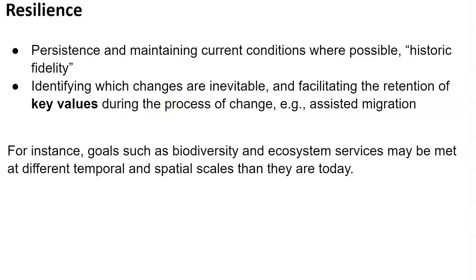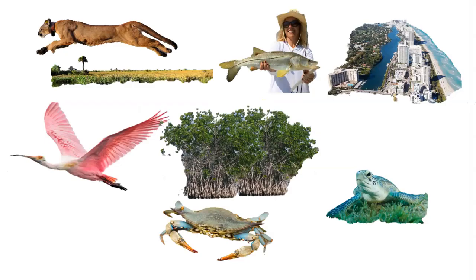Over time, we may need to move away from persistence-based resiliency aimed at historical fidelity and instead do the very hard work of identifying and accepting changes that are inevitable, and identifying what goals are possible for a non-stationary Everglades. When the goal is historical fidelity, everyone knows what that looks like. If the ramp disturbance takes that off the table, we would need to have hard conversations about what defines the Everglades. We can't have it all — we will have to make choices. That may be the most wicked part of all.